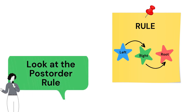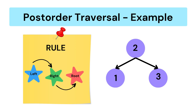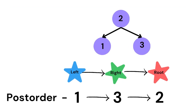In post-order, the root should always be at the end. So first we have to traverse the left subtree, then the right subtree, then the root node. So for this BST the order will be 1, 3, 2.